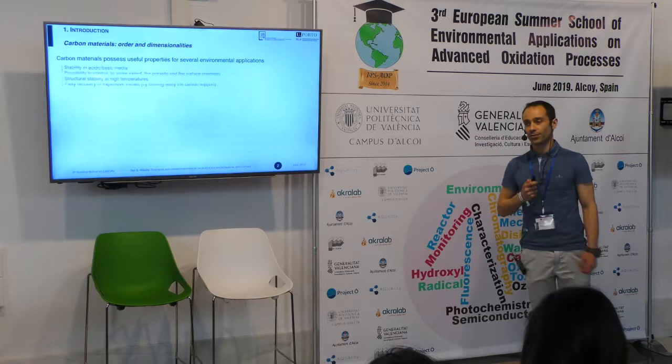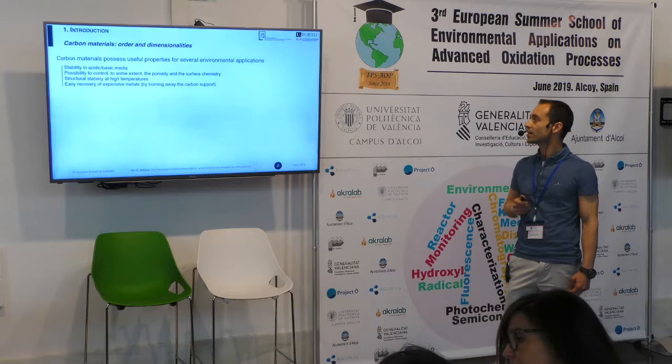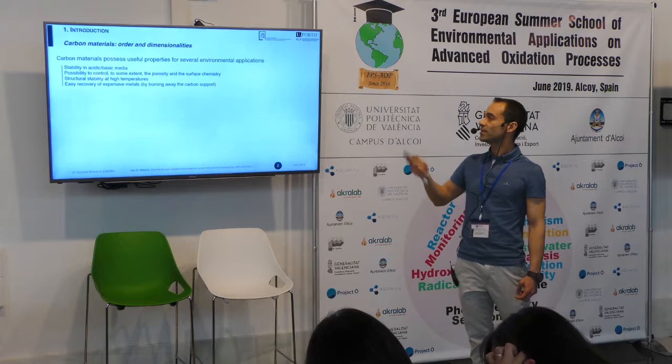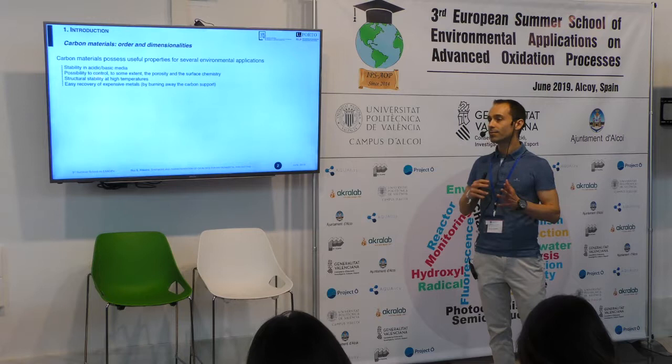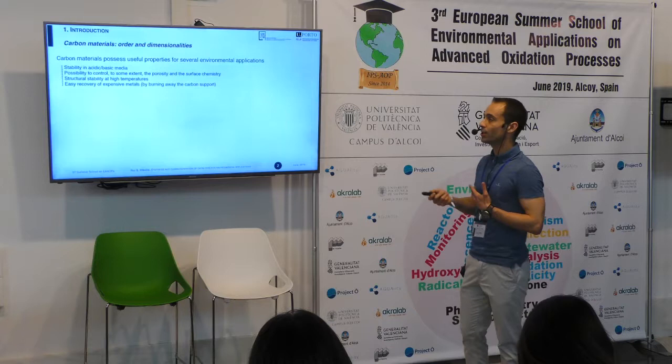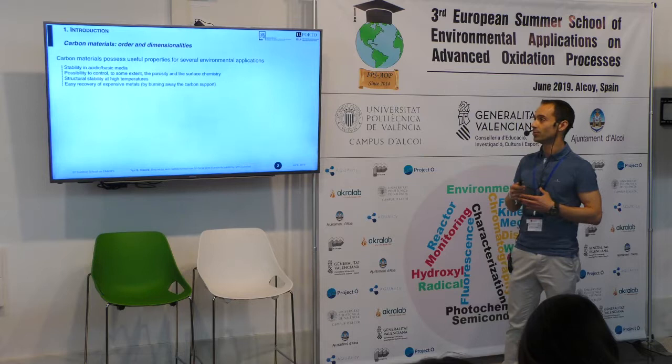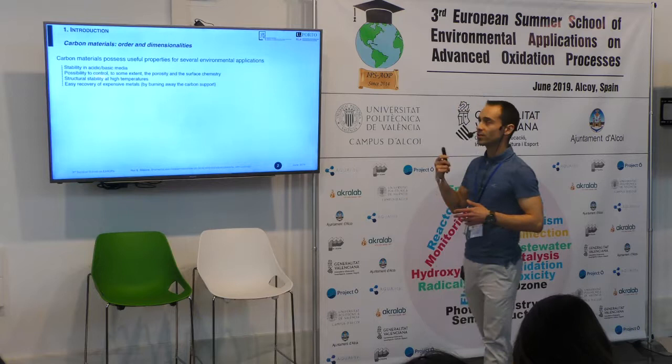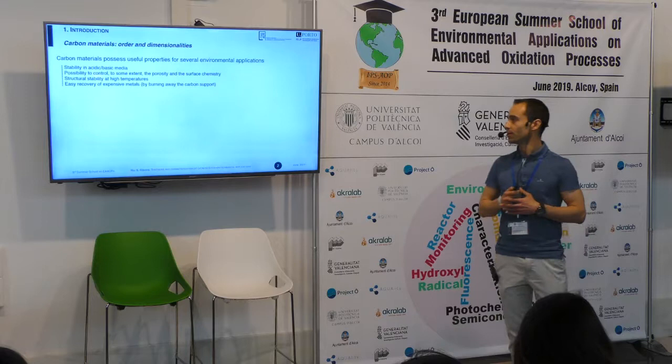Why carbon materials? Carbon materials possess useful properties for several environmental applications, such as the stability in acidic or basic media, the structural stability in a relatively wide range of temperature, the possibility to recover expensive metals easily if carbon materials are to be used as supports. But the main feature is the possibility to control, up to some extent, the porosity and the surface chemistry of the carbon materials.